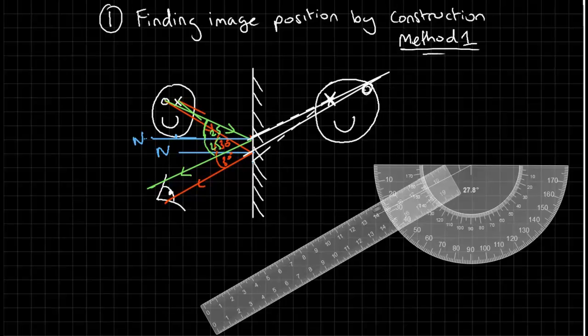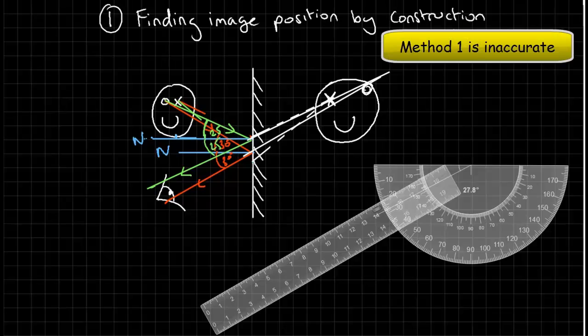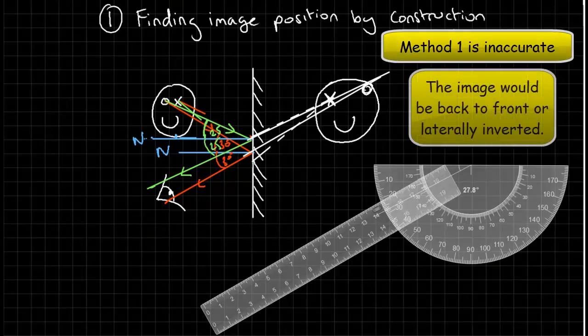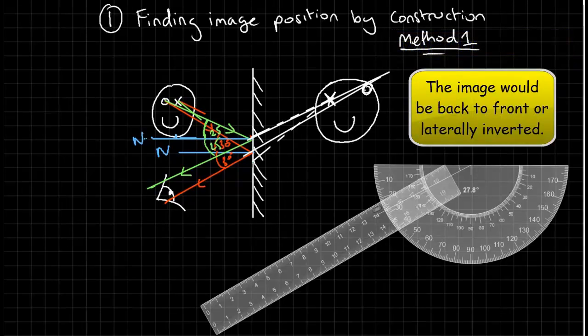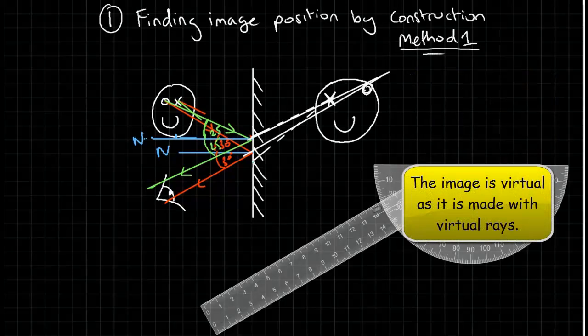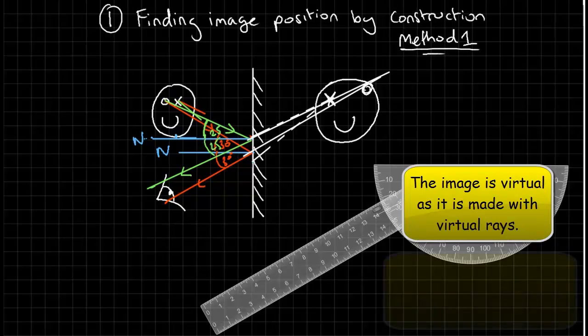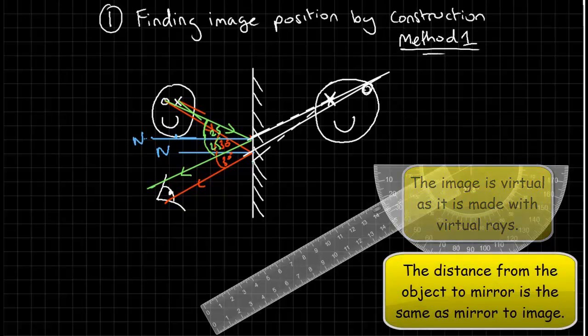Now we're tracing the rays back to find out where they appear to have come from to the eye. One of the problems with this method is that it's difficult to do accurately due to all the angle measurements. This image is not actually laterally inverted, because it's a 2D image, but in a real situation where you've got a 3D object, you will have lateral inversion as well. The image is also not made with real rays, but virtual rays. This makes it a virtual image. The image also appears the same distance behind the mirror as it does in front.